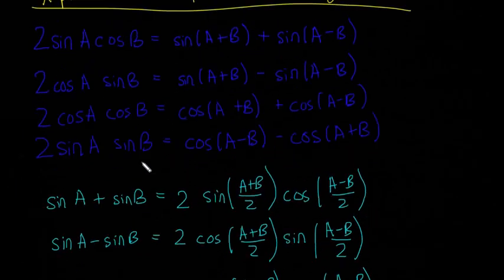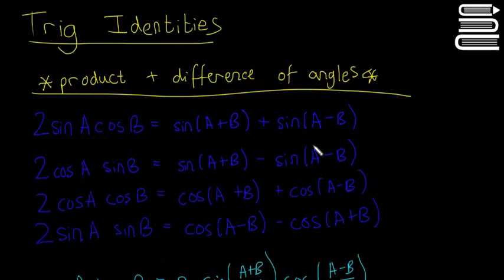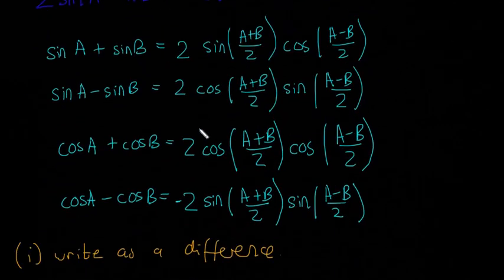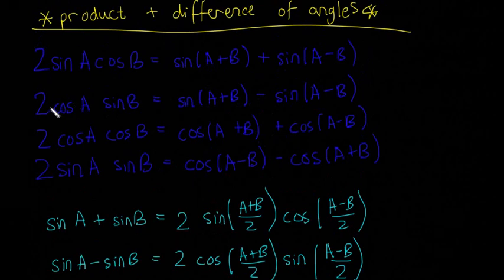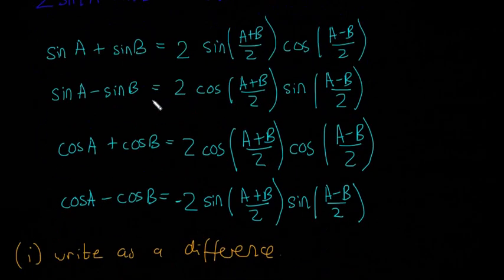OK, so we're going to have to go up to the dark blue ones. So we want to turn something like this into a difference. So we have cos of something, sine of something. So we're going to use this one here. So two cos a sine b.